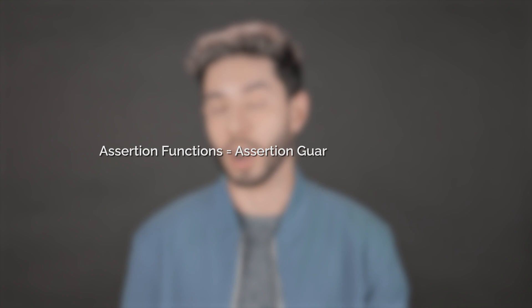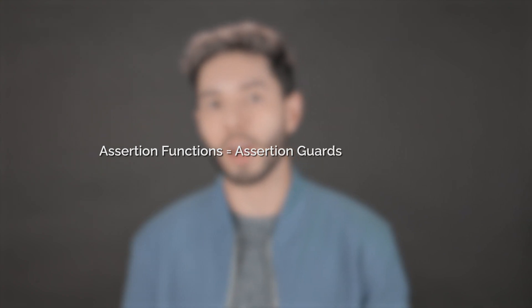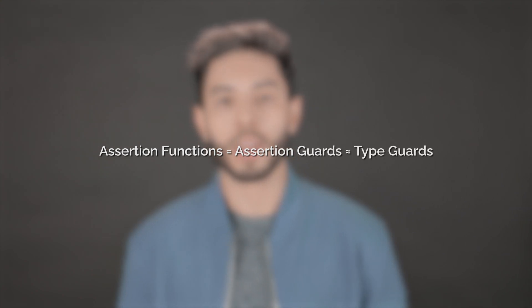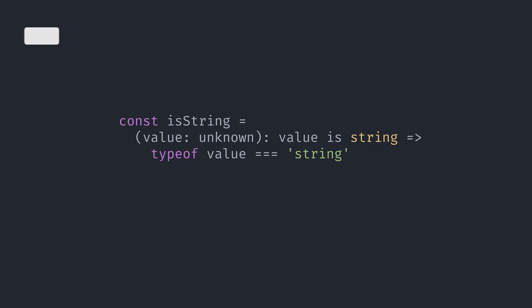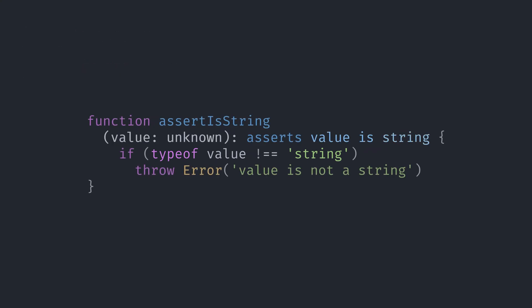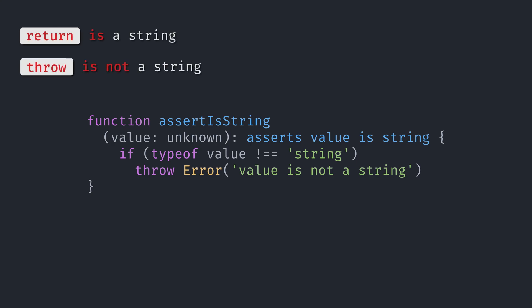The reason why assertion functions are also known as assertion guards is because of their similarity to type guards. In our type guard for strings, we return true if the given argument is a string and false if it's not. If we wanted an assertion function instead of a type guard, instead of returning either true or false our function would either return or throw. If it is a string it returns; if it is not a string it throws.